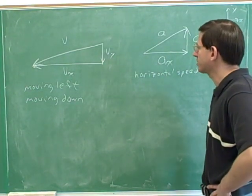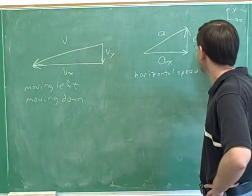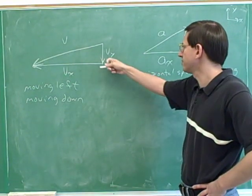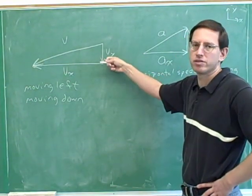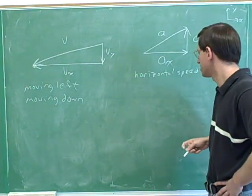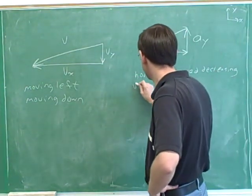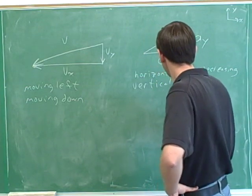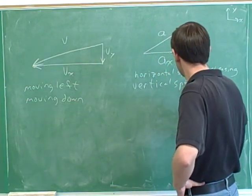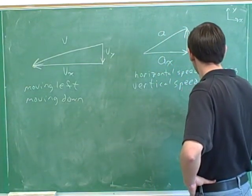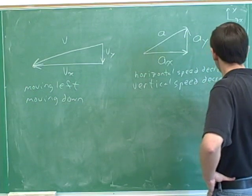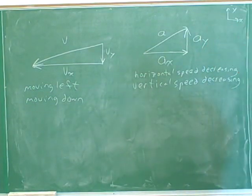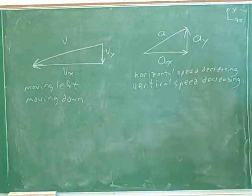How about vertically? The vertical acceleration is up and the vertical velocity is down. That's again an anti-parallel relationship, so the vertical speed is also decreasing. A sub Y is up and V sub Y is down — they're anti-parallel, so the vertical speed is also decreasing.